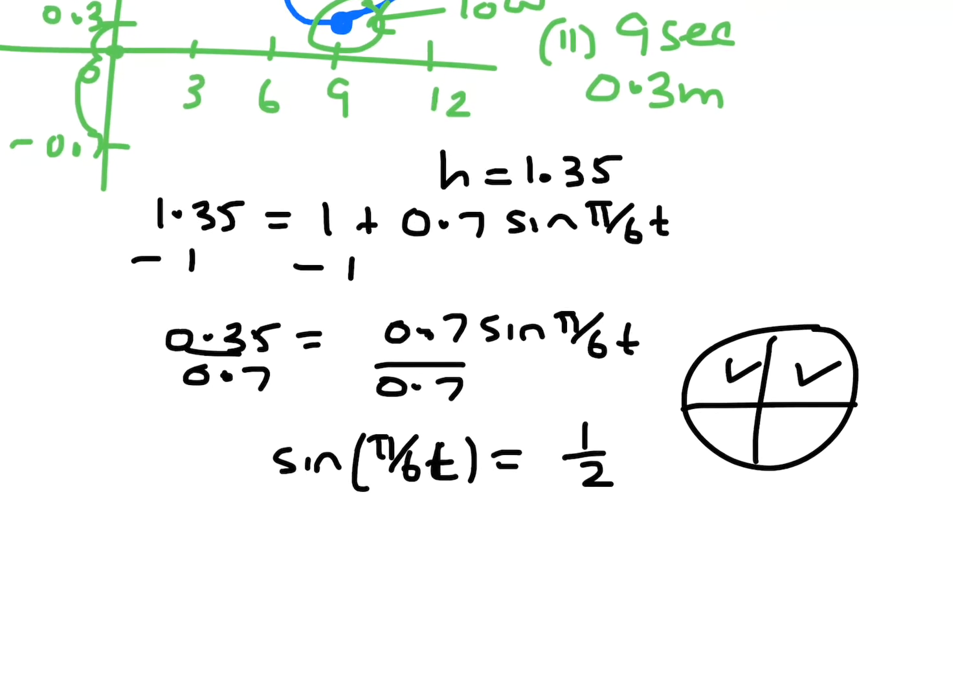So sin is equal to a half. That's in the first and second quadrant because it is positive. And they would be your first two times. So π on 6t, when it is equal to a half, sin inverse of a half will give you 30, which is actually π on 6.